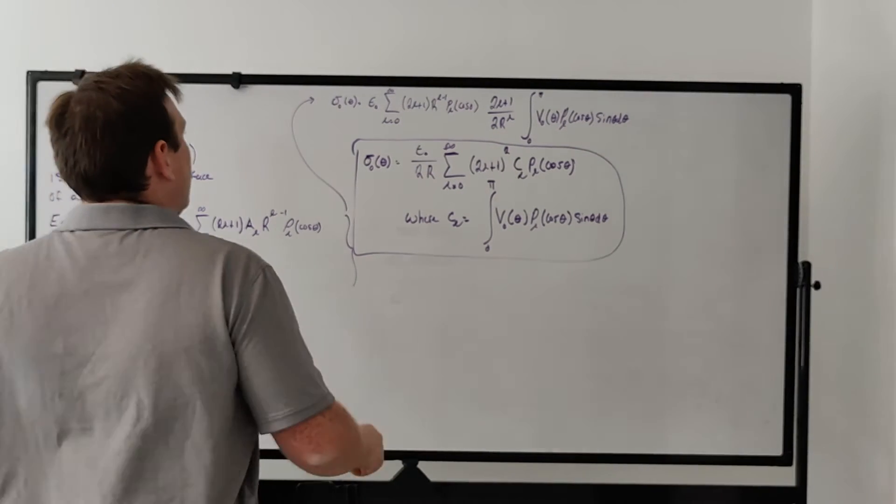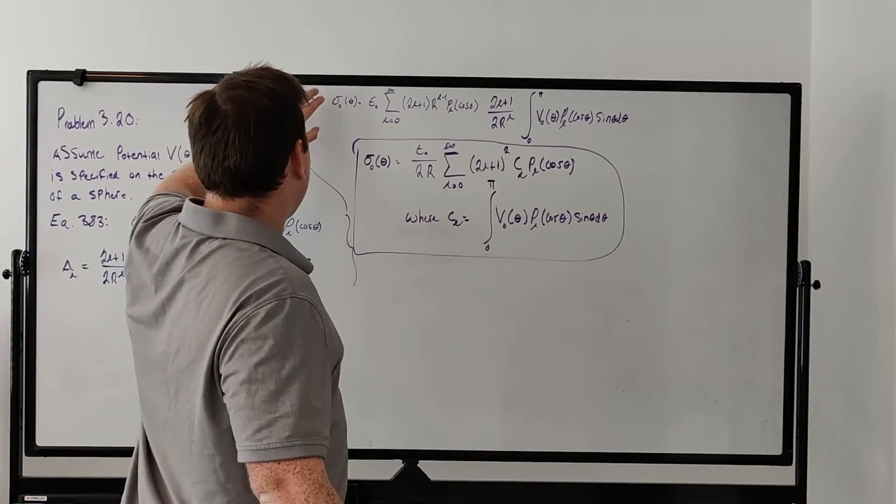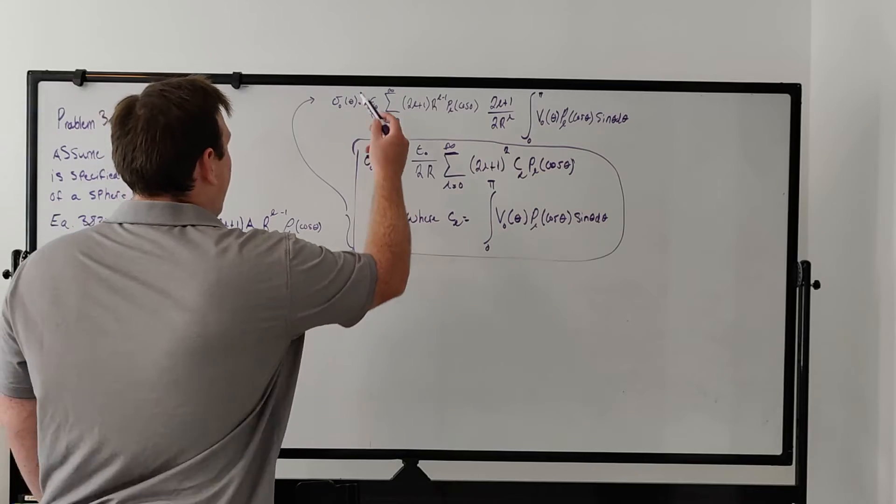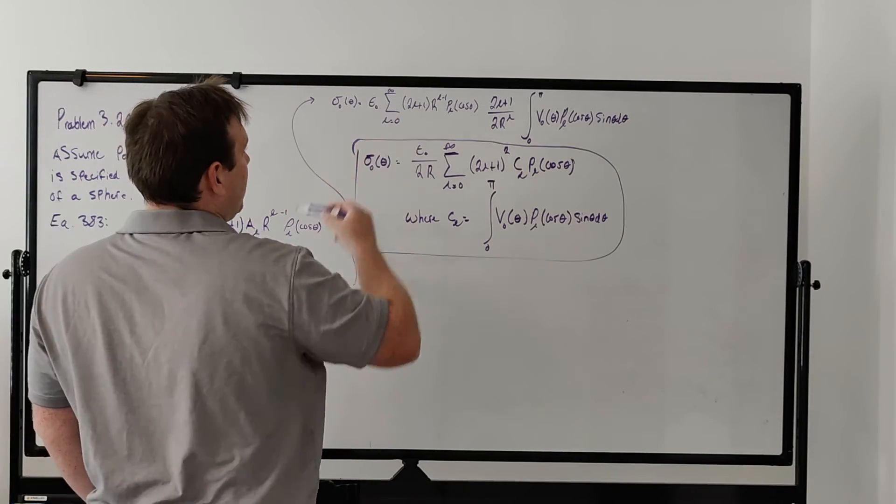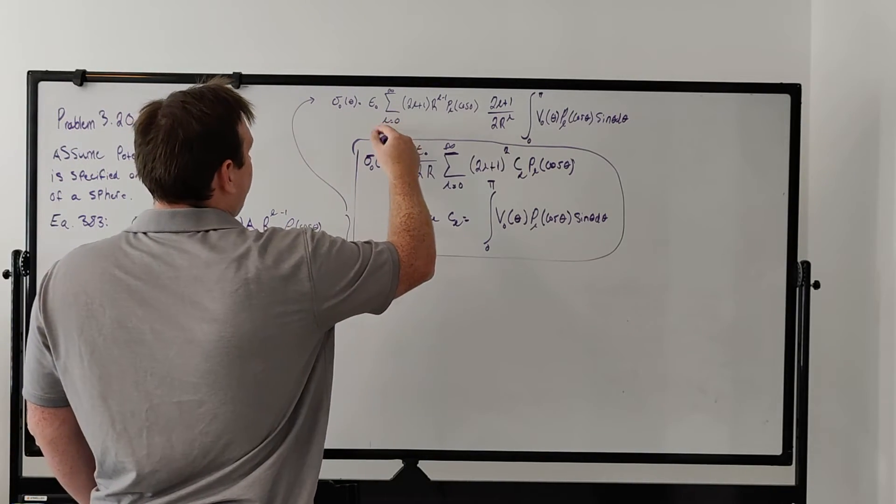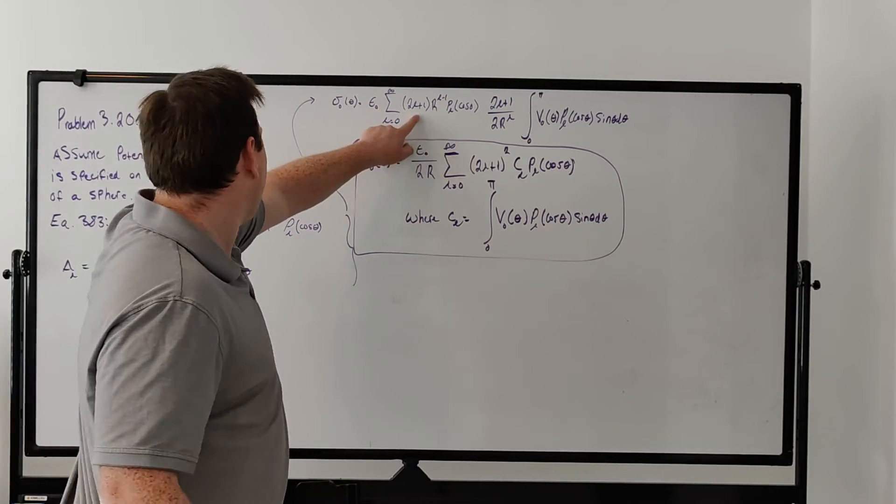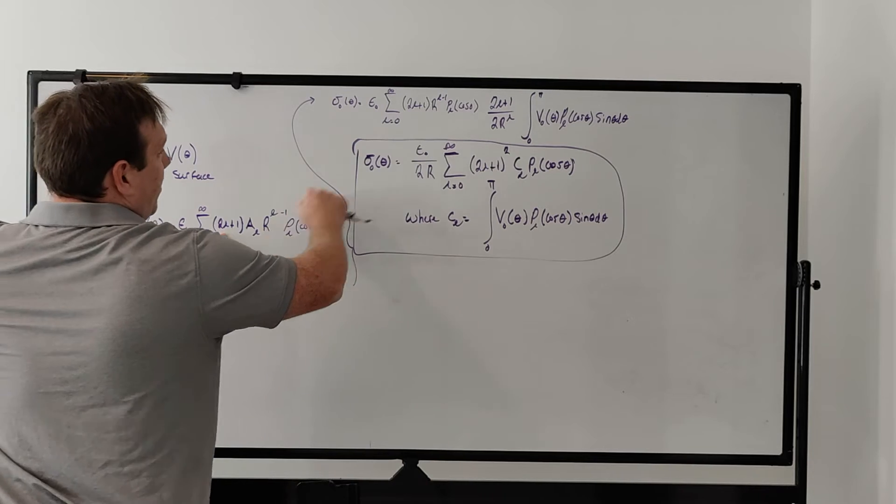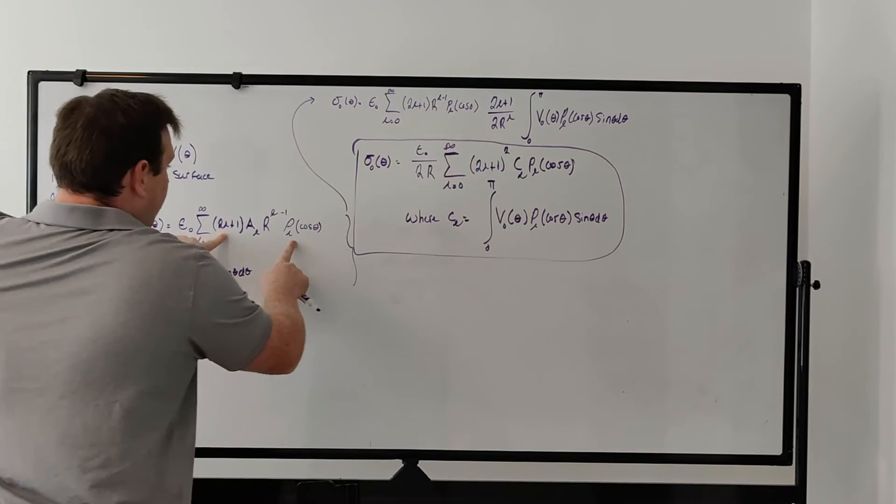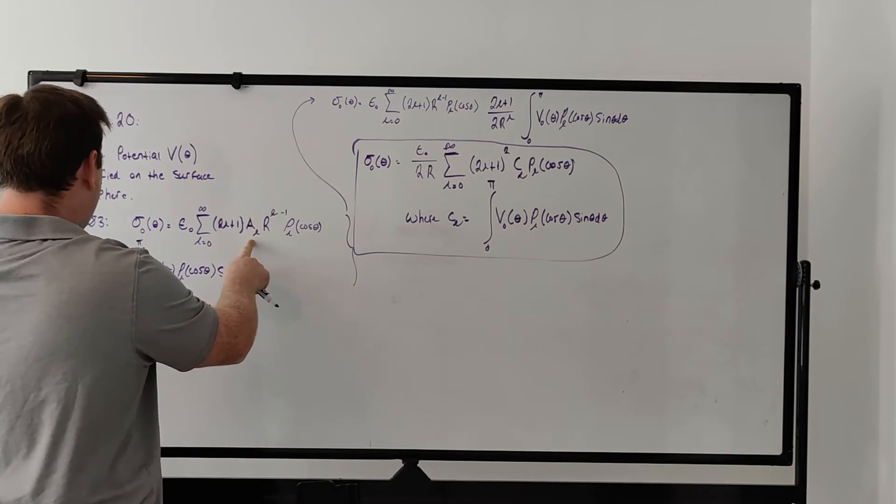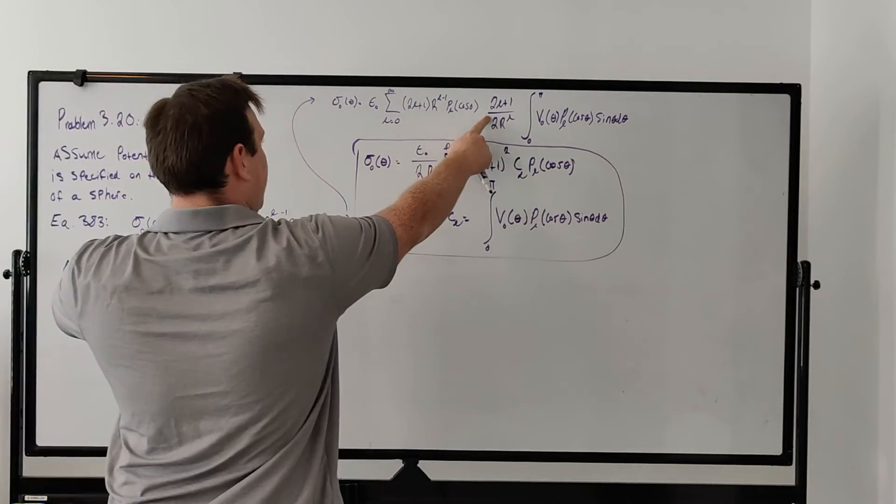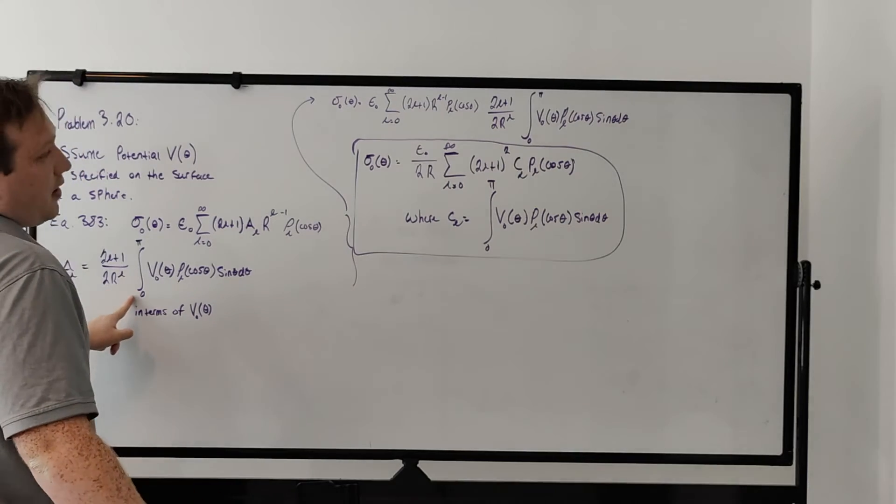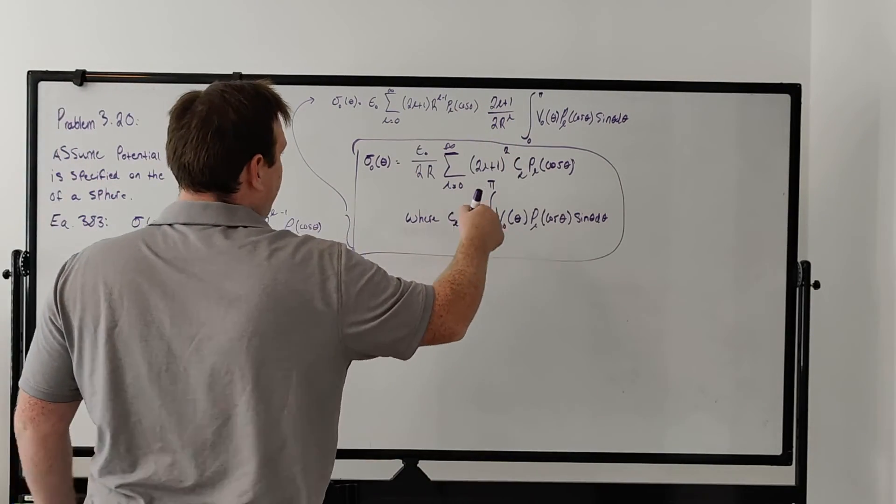For the charge density when we plug in A_L, we get ε₀, which I pull out. We have the summation from L=0 to infinity, we have 2L+1 from here, we have R^(L-1) from here, P_L(cos θ) from here. Plugging in this expression for A_L at the end, we get (2L+1)/(2R^L) times the integral, and then just rearranging some terms.